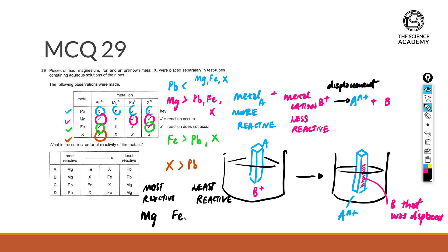Lastly, followed by X, and the one that has no displacement at all would have been the least reactive, and that is going to be lead by itself. So, it will be Mg being more reactive than iron, being more reactive than X, and being more reactive than lead. The answer for this question here is A.